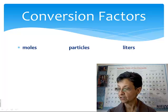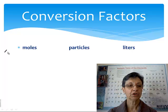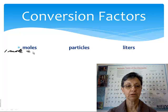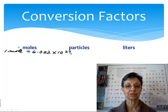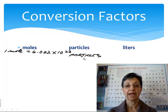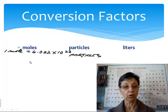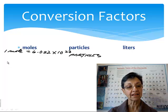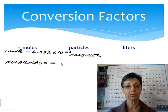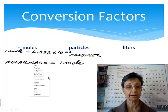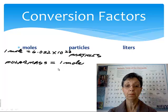Let's write some of the conversion factors we are going to use — these are really equivalences. We know that one mole of anything equals 6.022 times 10 to the 23rd particles. In chemistry, particles means atoms, molecules, or ions. Another conversion factor is that the molar mass of a substance in grams is equal to one mole of that substance.